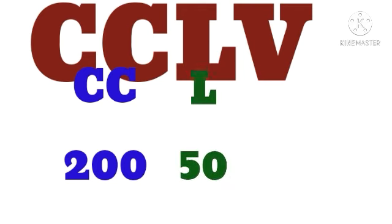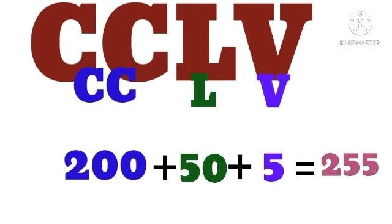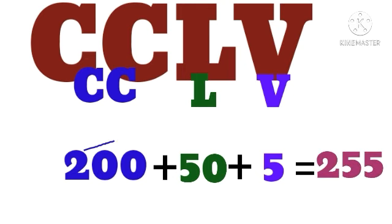CCLV: CC means 200, L means 50, V means 5. So 200 plus 50 plus 5 equals 255, that is the answer.